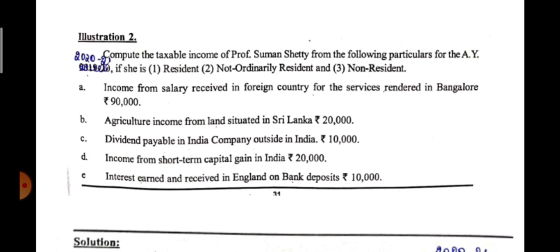If the income is earned in India, it is taxable in case of all three. If the income is received in India, it is taxable in case of all three. For Point A, income from salary received in a foreign country — the income is received outside India, but the services are rendered in Bangalore, meaning it is earned in India. Since the income is earned in India, it is taxable in case of all three, so show 90,000 in all three columns.